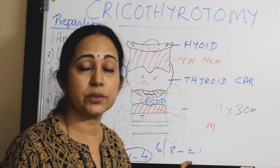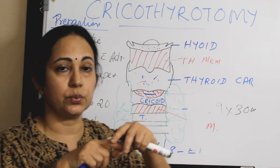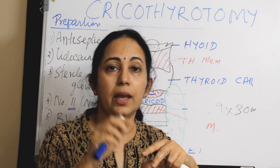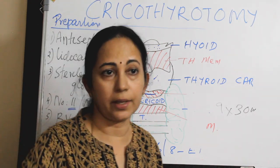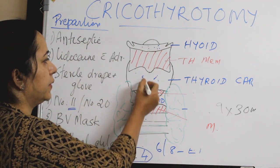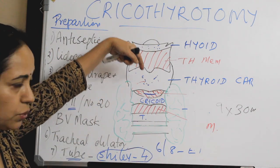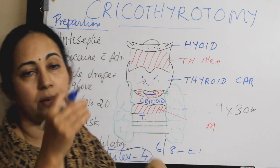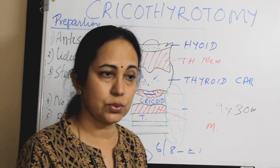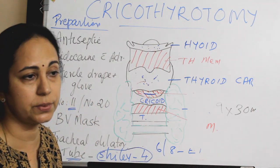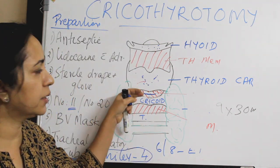If you have an endotracheal tube number 6 or 8, you can use that. First, pass a bougie through the cricothyroid membrane — always directing it downwards, as going upward risks injury to the vocal cords. Then advance the endotracheal tube number 6 or 8 over the bougie. Alternatively, if you have a Shiley tracheostomy tube, you can directly insert it. Then keep it in place, and your cricothyroidotomy is done.